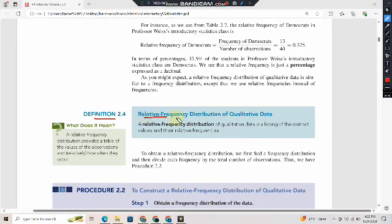Definition 2.4: Relative frequency distribution of qualitative data. A relative frequency distribution of qualitative data is a listing of the distinct values and their relative frequencies.